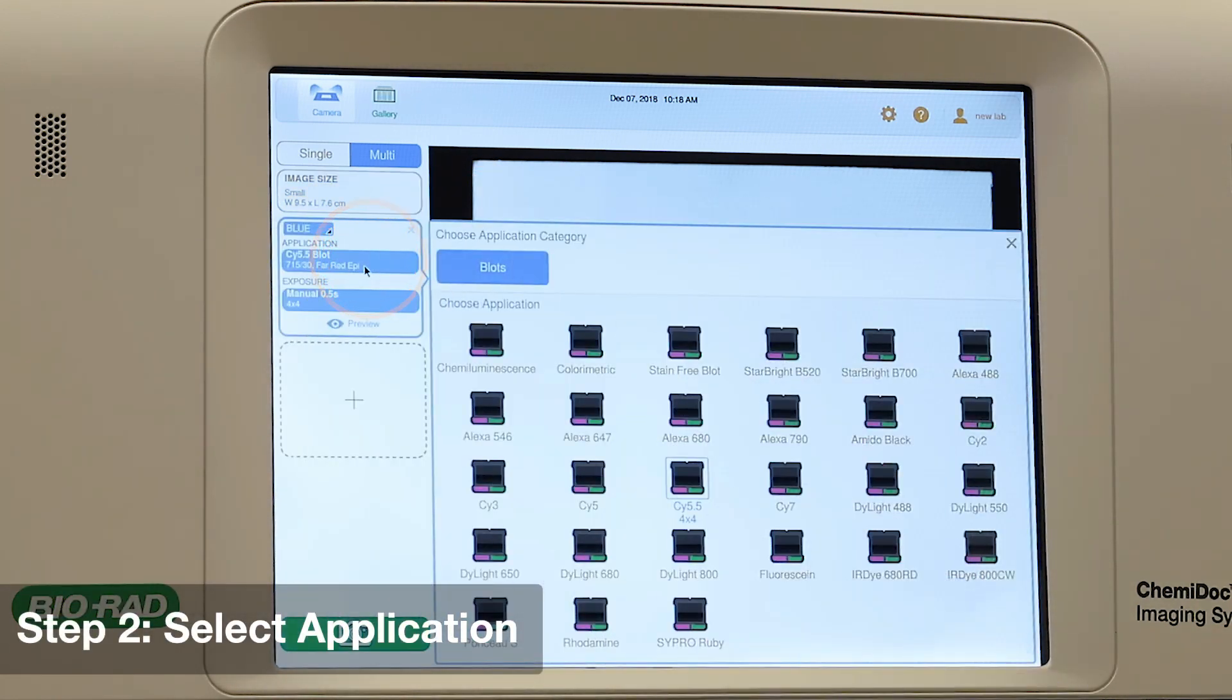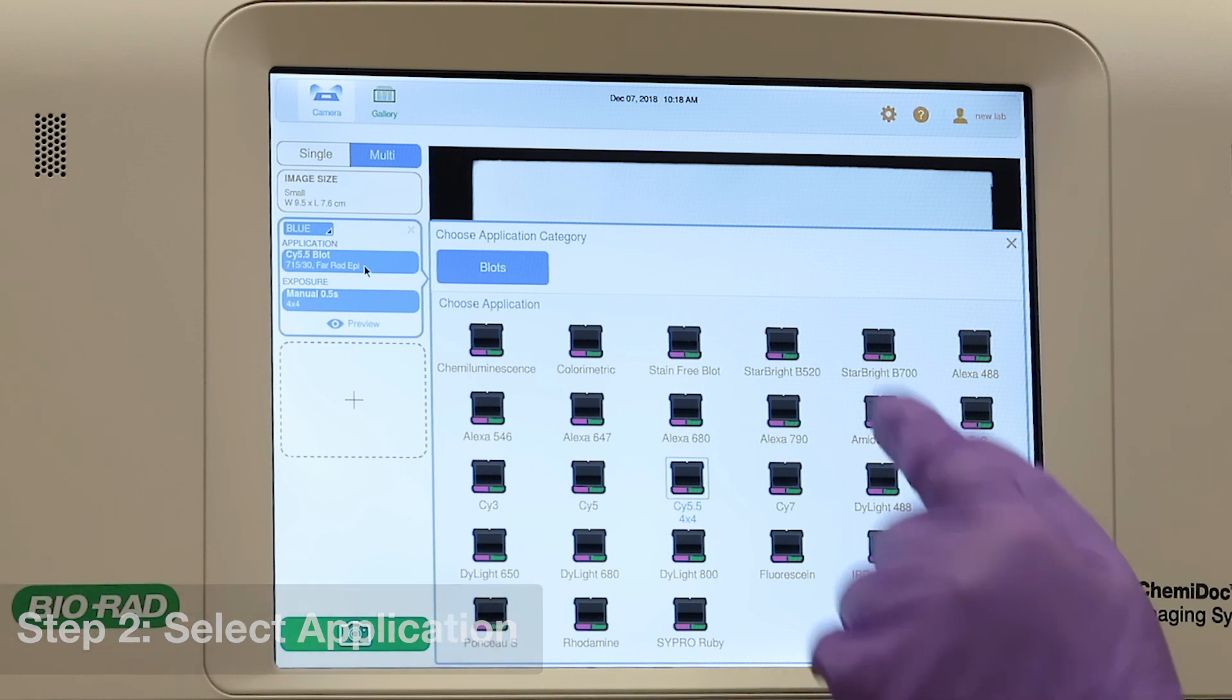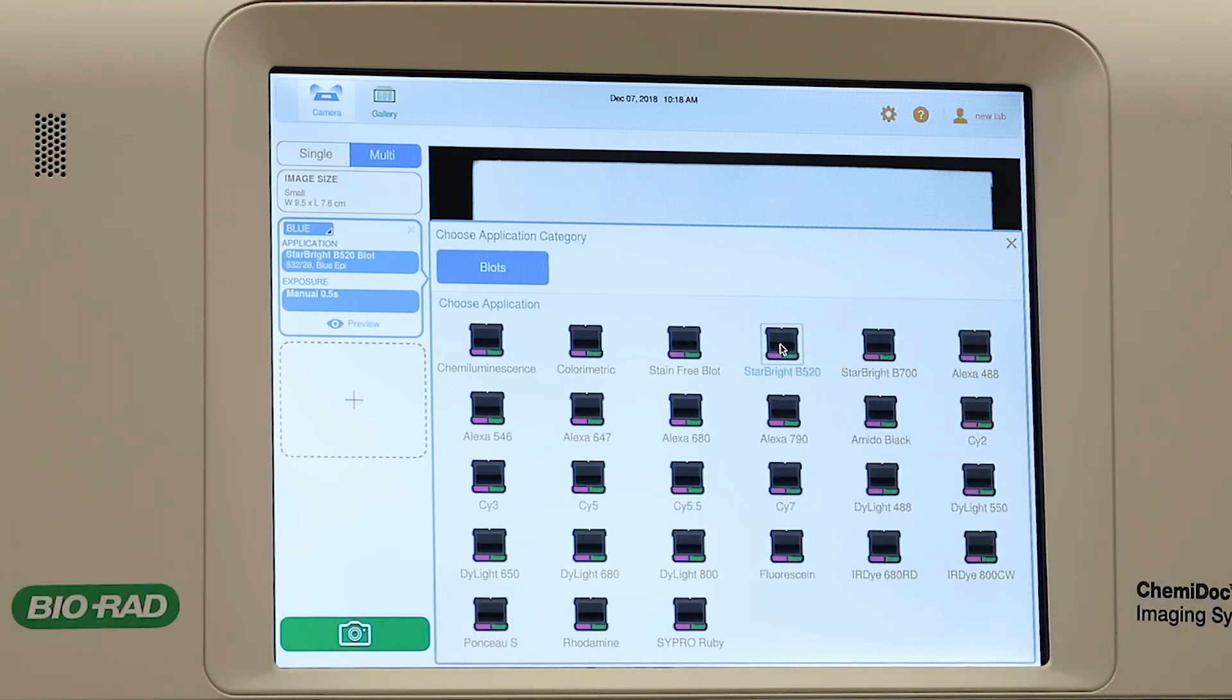Tap Application, select Blots, and choose the appropriate fluorophore. Here we're visualizing Starbrite 520, DyeLite 680, and DyeLite 800.